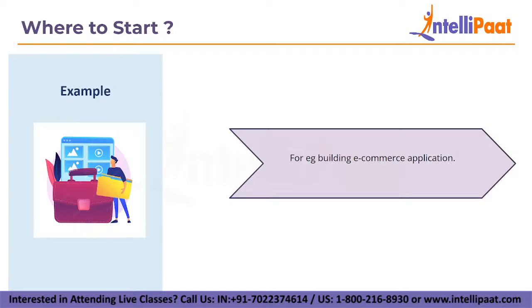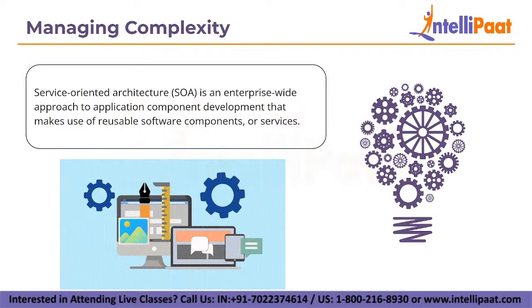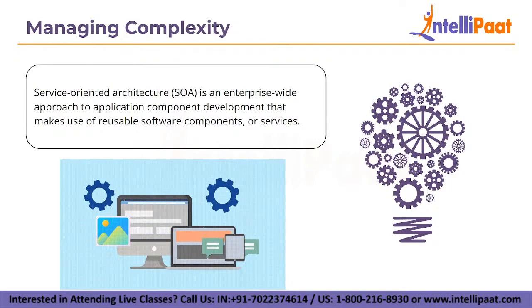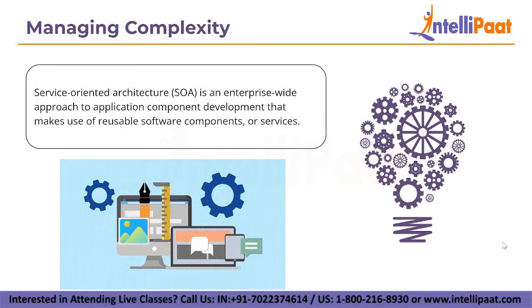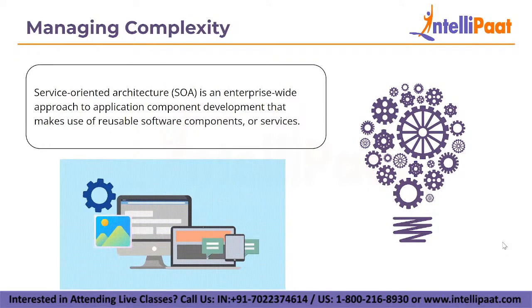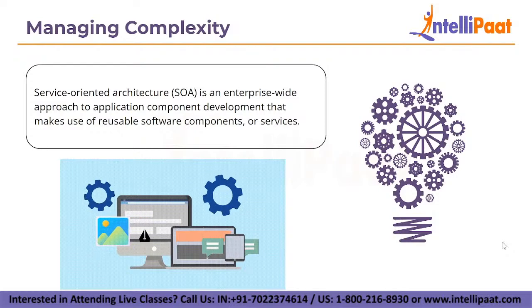You can see a monolith application broken down into microservices — complexity hidden within the monolithic application becomes complexity between microservices. Now let's discuss how we can manage that complexity. There are two kinds of architectural style. The first is Service Oriented Architecture (SOA), which is an enterprise-wide approach to application component development that makes use of reusable software components or services. Each service in SOA is made up of the code and data linkages needed to carry out a given business function.